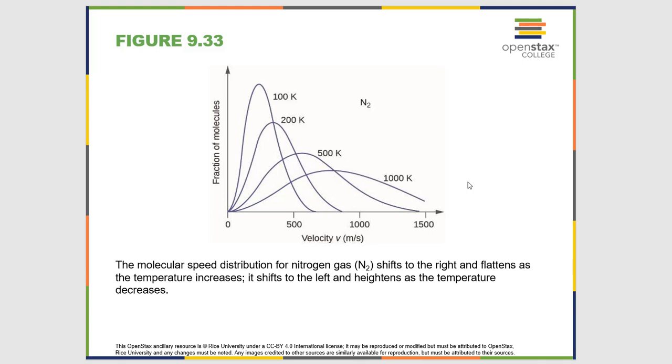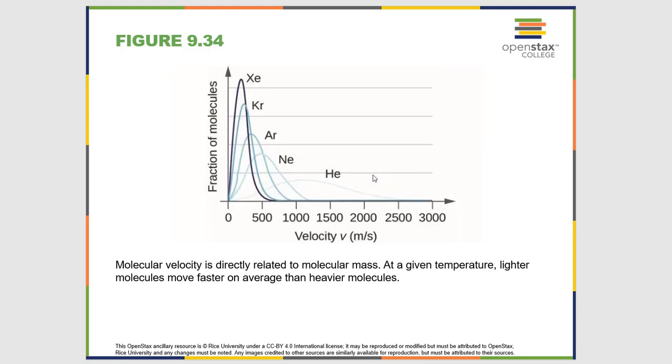Instead we want you to know the outcomes of these things. So the outcomes that we just discussed as we change the temperature of nitrogen, or the difference in the highest probability speed of this series of noble gases because of their molar masses. As they get lighter, the highest probability speed increases. So outcomes are important, but not so much actually doing those calculations.